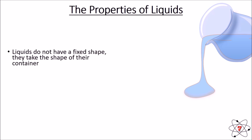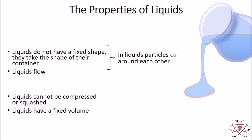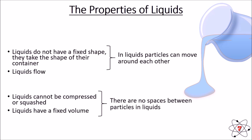Liquids do not have a fixed shape — they always take the shape of their container. On the right we can see a picture of a jug; the liquid has taken the shape of that jug. Liquids can flow and be poured. However, just like a solid, liquids cannot be compressed or squashed and they do have a fixed volume. Liquids can flow and change shape because the particles can move around each other. They cannot be compressed because there are no spaces between particles, so you can't make the particles move closer together, meaning the volume is fixed.